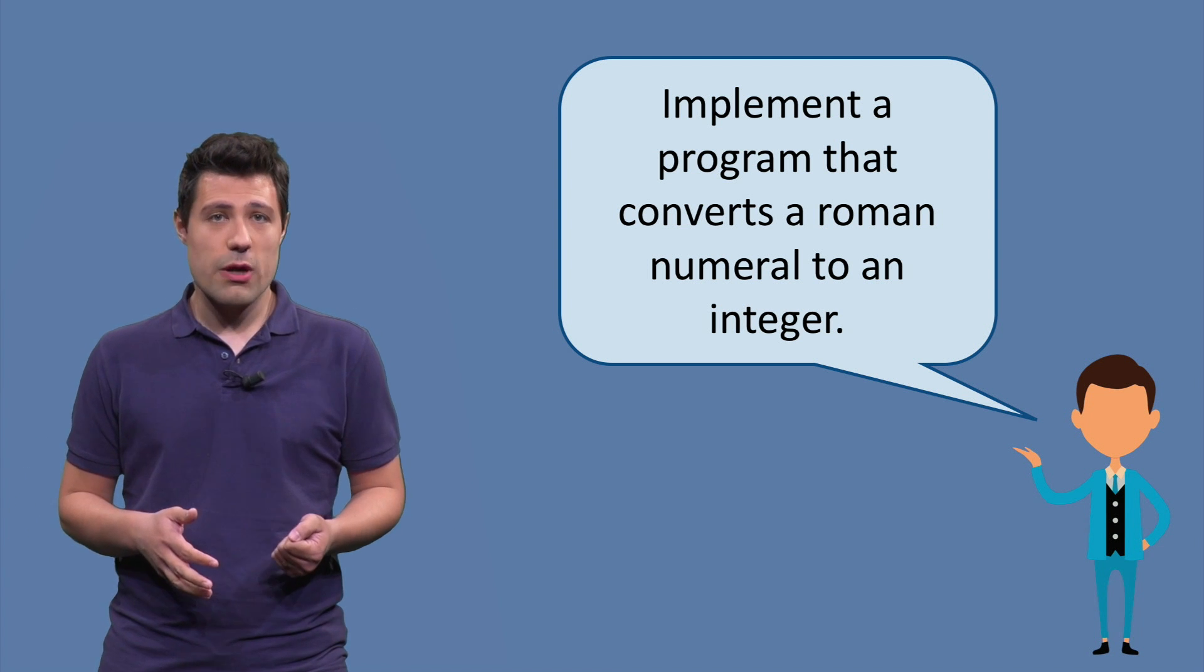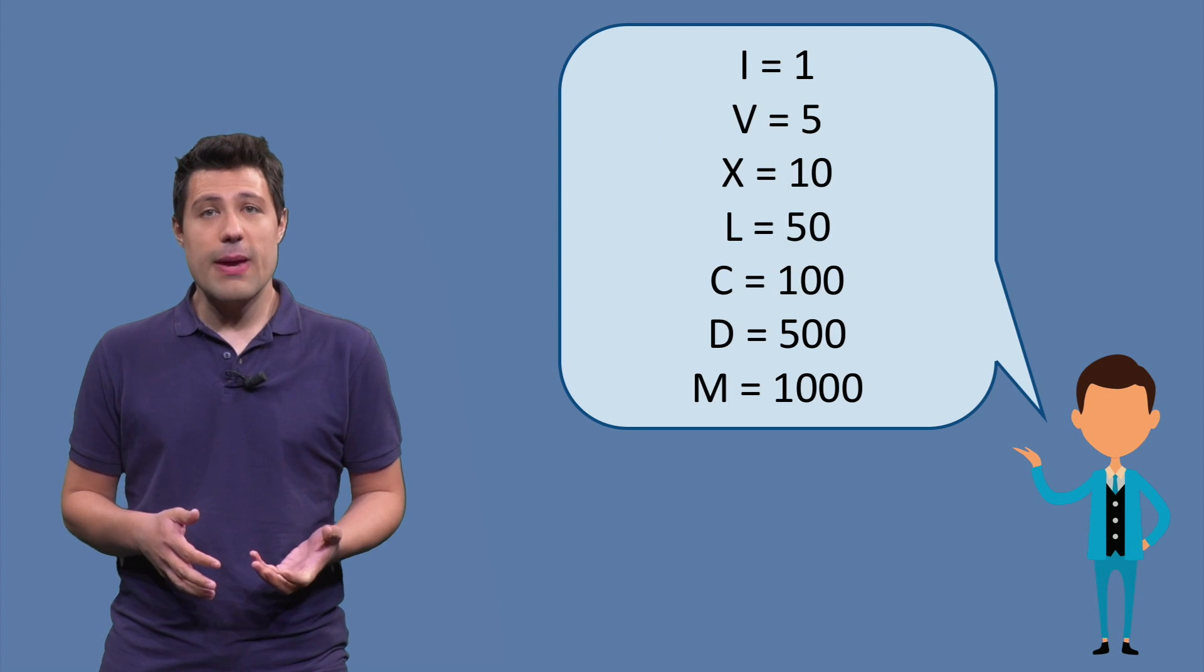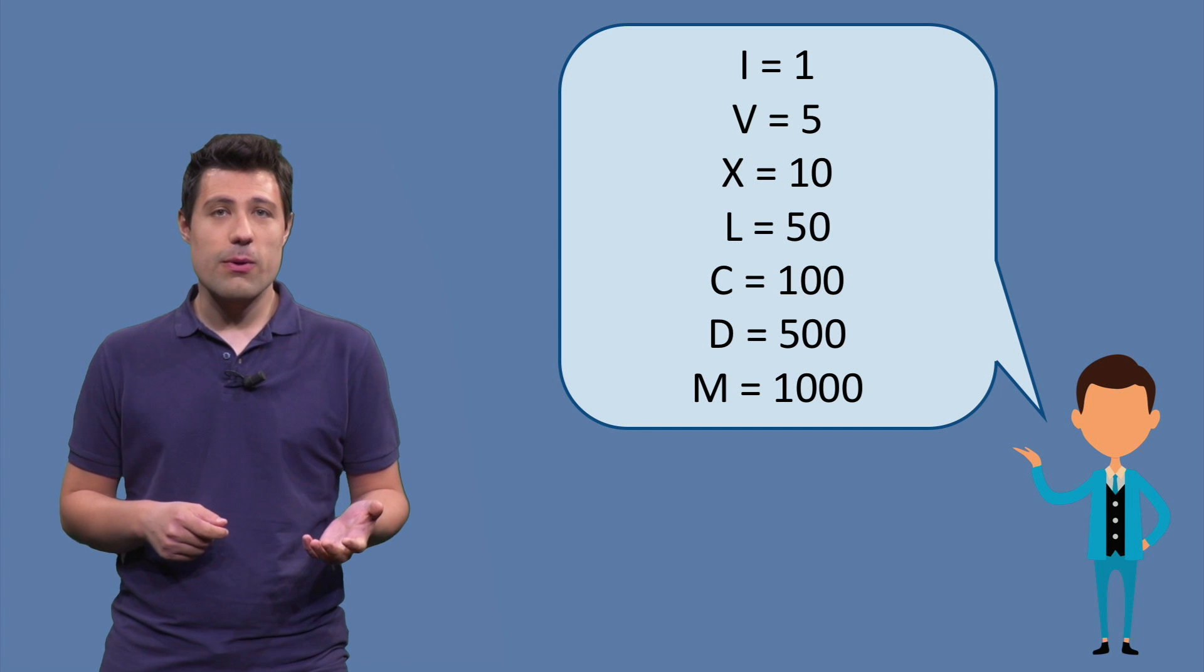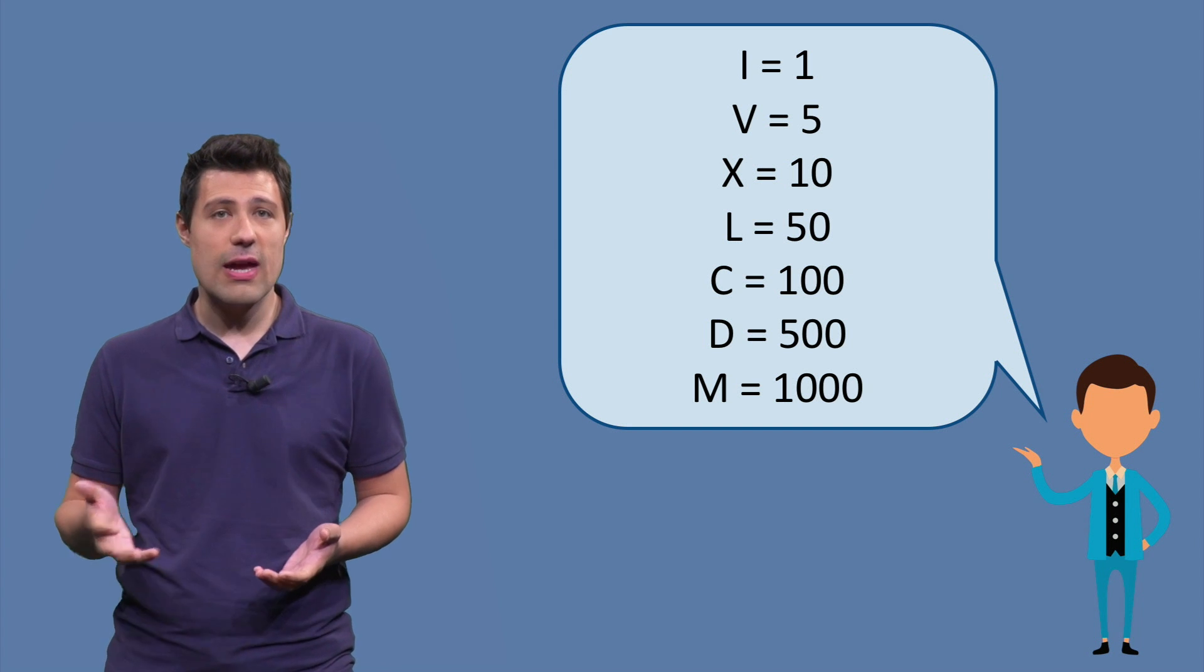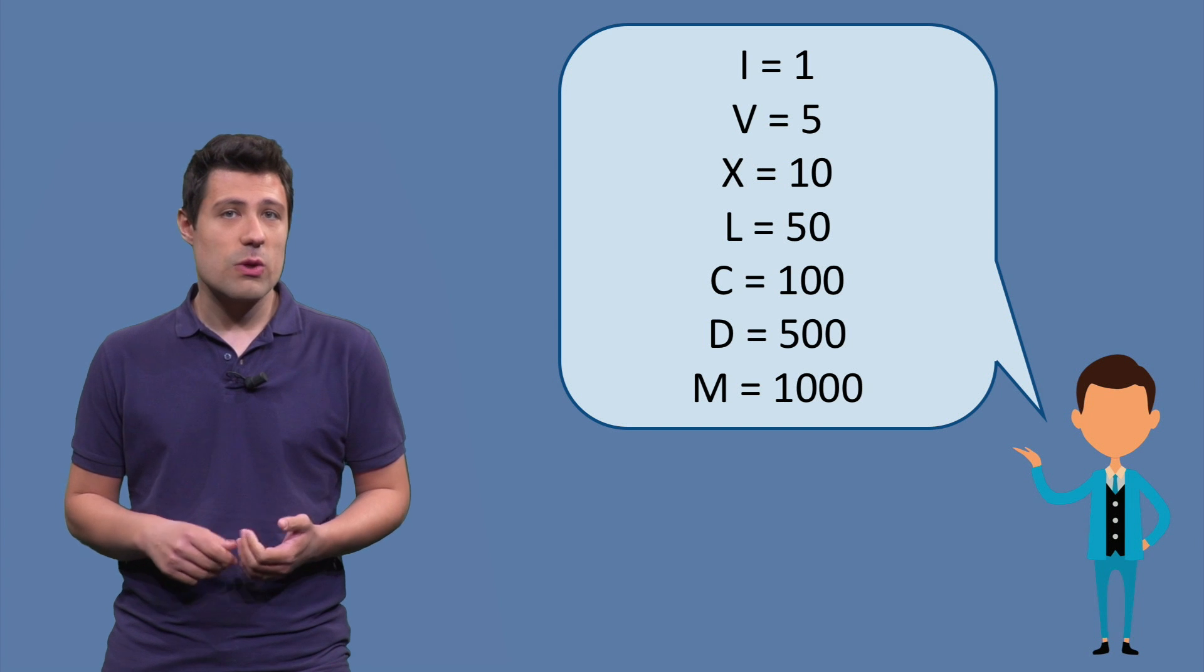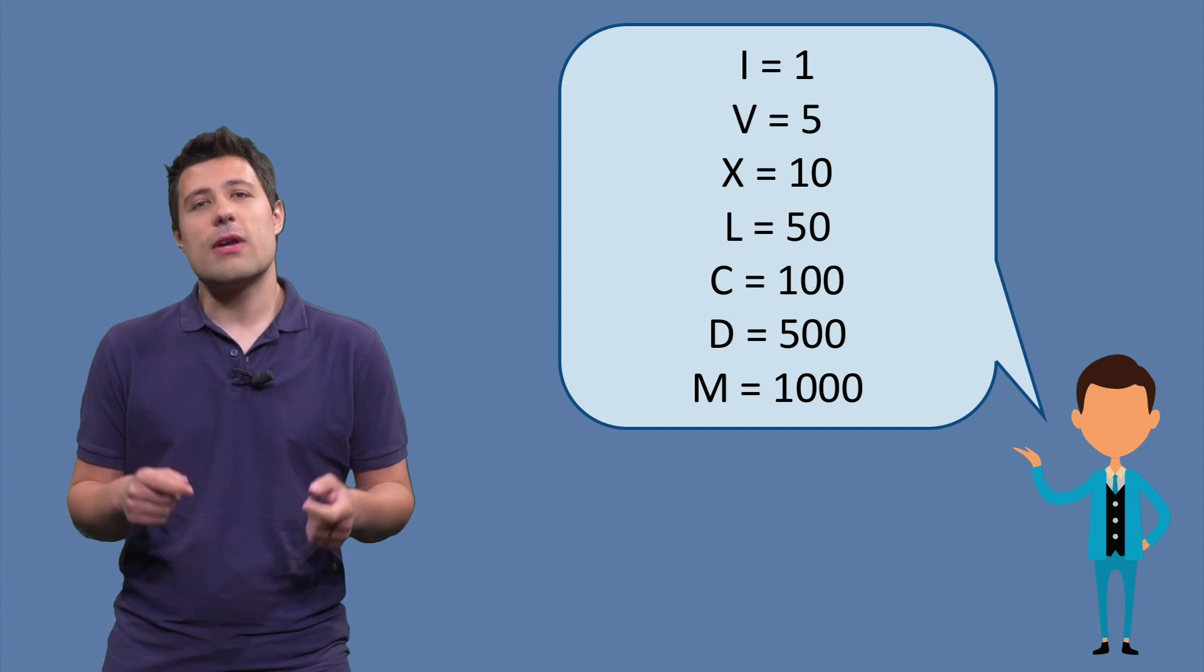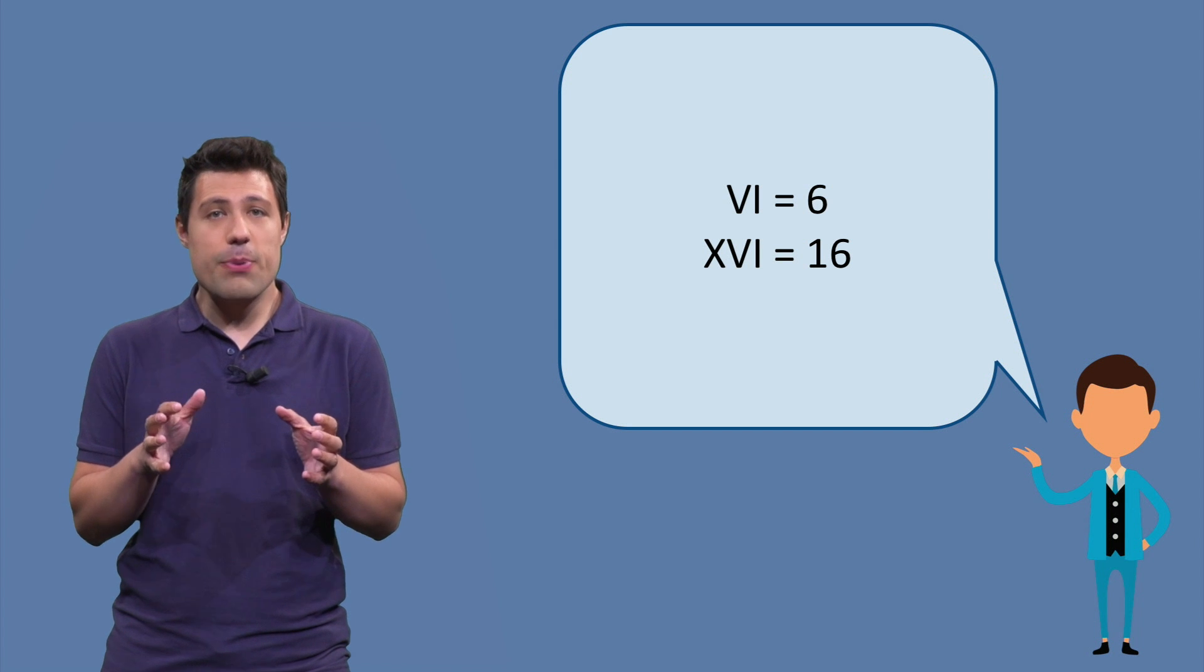And how do roman numerals work? They are mostly based on letters, and each letter has a corresponding number. For example, I is 1, V is 5, X is 10, L is 50, C is 100, D is 500, and M is 1000.